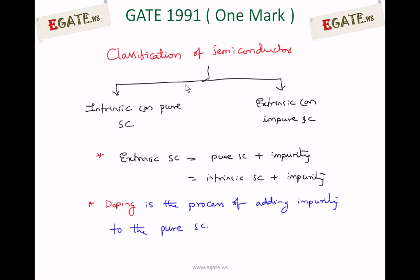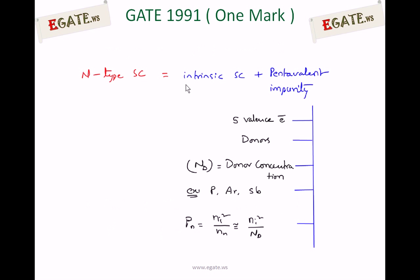The type of impurity you add gives rise to the category of extrinsic semiconductor — one is N-type, the other is P-type. N-type semiconductor is formed by adding pentavalent impurity to the intrinsic semiconductor. When you add pentavalent impurity, it turns into an N-type semiconductor.